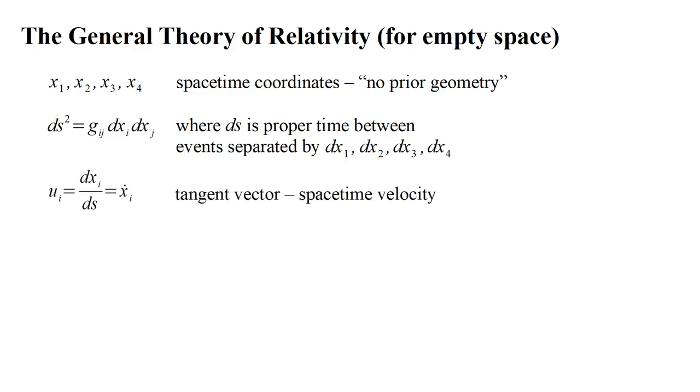There are four spacetime velocities, ui for i equals one, two, three, and four. ui is the change in the i-th coordinate over the change in proper time. We also use the notation x dot i.